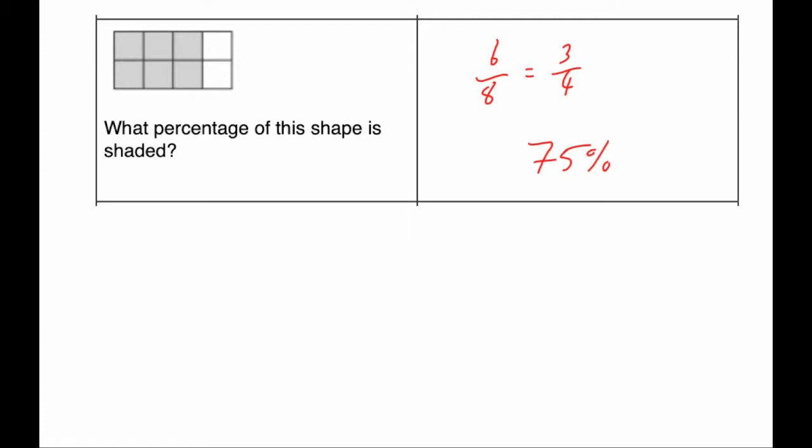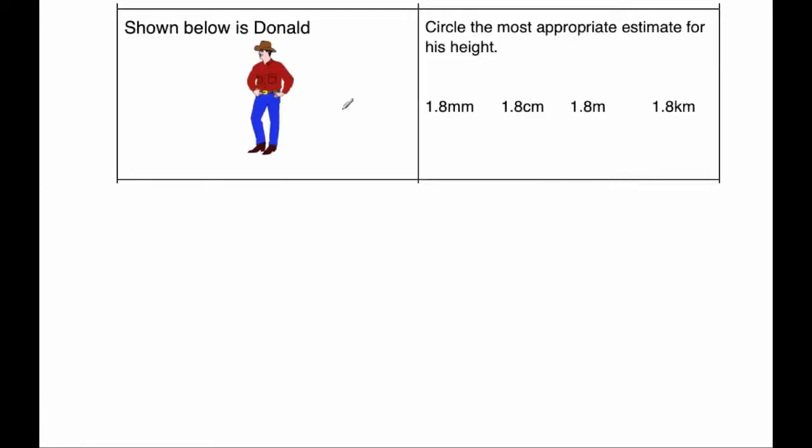Our next question says, shown below is Donald, circle the most appropriate estimate for his height. We've got 1.8 millimetres, that's tiny. 1.8 centimetres, that's very small. 1.8 metres, or 1.8 kilometres, that's far too big, so the answer would be 1.8 metres.